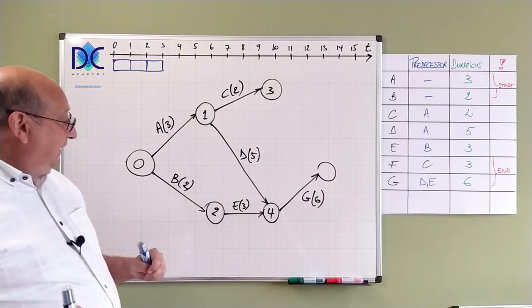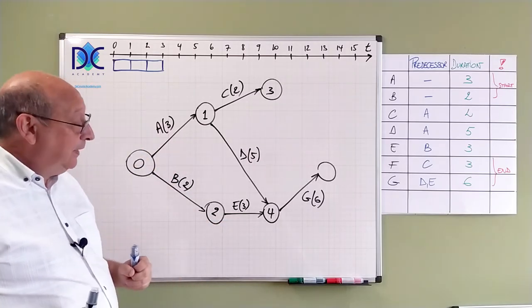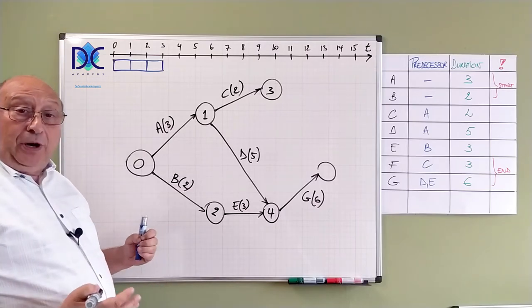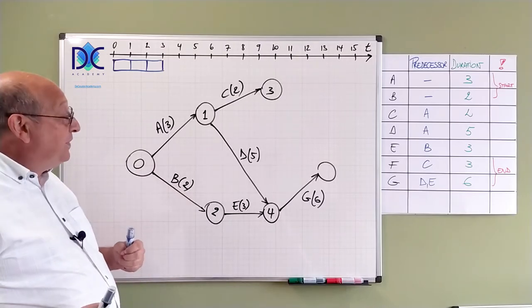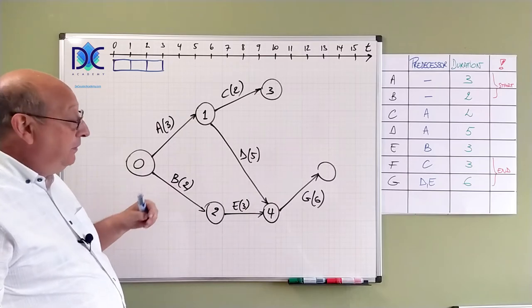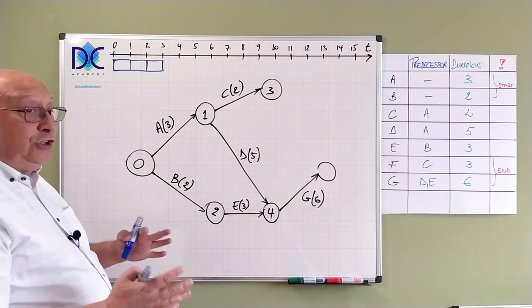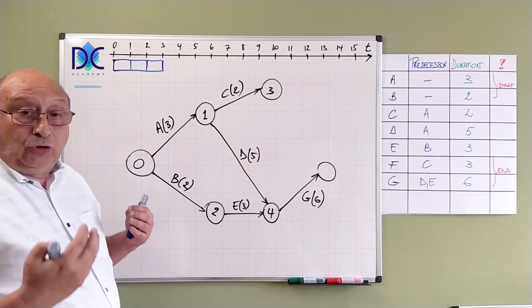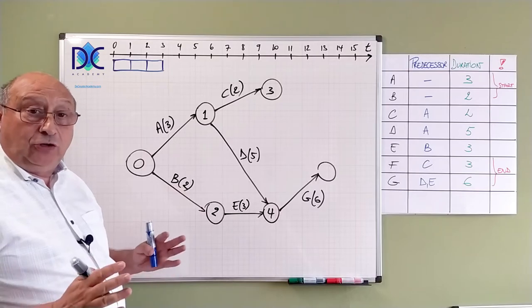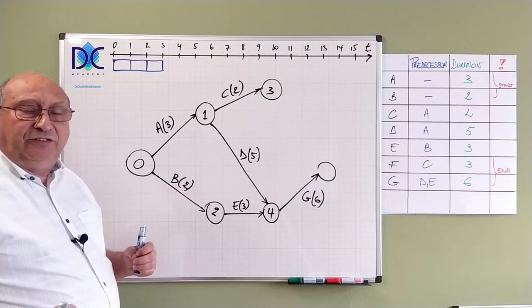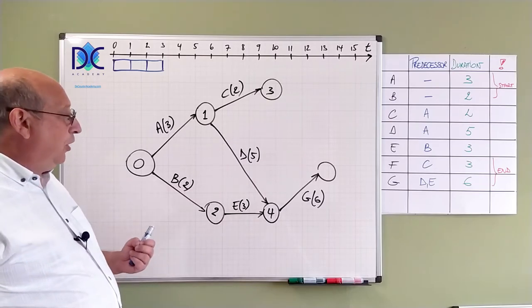Now just imagine that E should also be after A and B would have two predecessors. That would create a problem because I cannot have two arrows between two nodes. I can only have one arrow. In order to resolve that problem I should draw here a dummy activity. Just to be sure that this rule is correct. So there are some things that you have to be careful about when you're using this method. They have dummy activities and that's not always clear. And makes the method a little bit more tricky to complete.